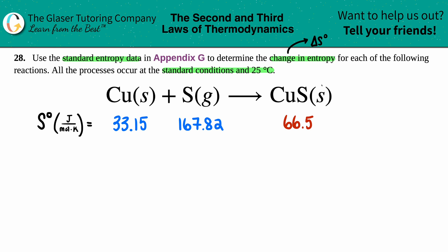So that's exactly what I did. I went to the back of the textbook to find out what those S values are. So for copper solid, it's 33.15. Sulfur is 167.82. And then the CuS solid is 66.5.